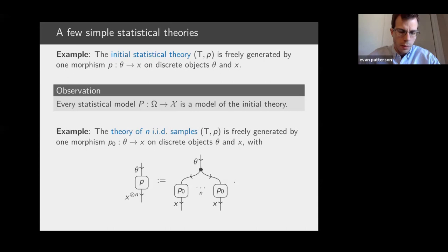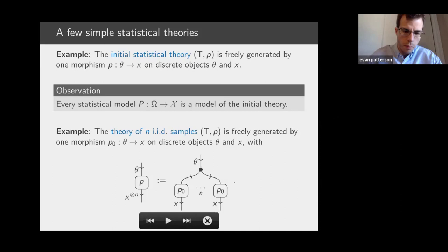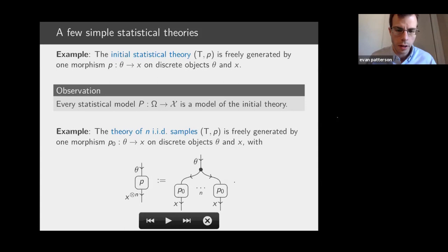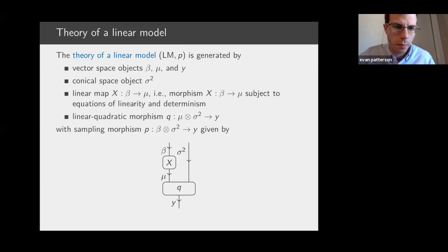A somewhat constrained but still quite general theory is the theory of NiiD samples, which says that you start with a generator P₀, and then define the sampling morphism to share the parameter theta and have n independent copies of the data coming from this generator P₀. This is the theory that describes any sampling distribution which is an IID sample of n things.